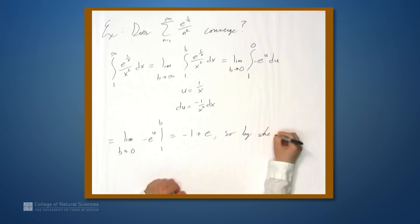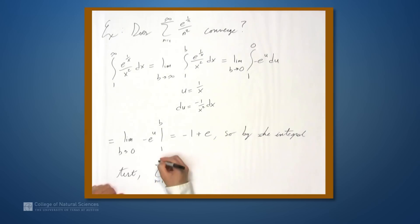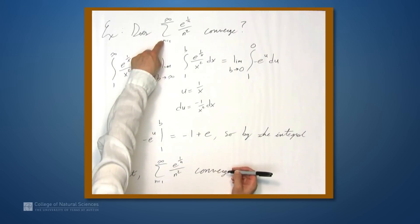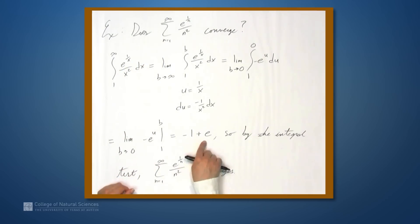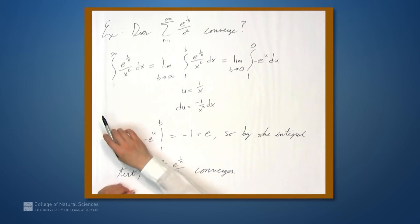By the integral test, the series from n equals 1 to infinity of e to the 1 over n over n squared converges. Now it's very important to note that the integral test doesn't tell you the value of the series. The value of this series is not negative 1 plus e — all we know from the integral test is that the series converges because the improper integral converges.